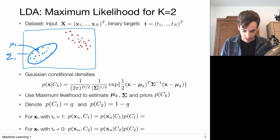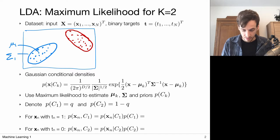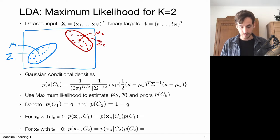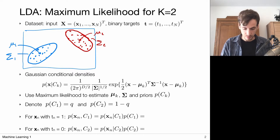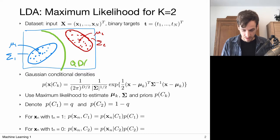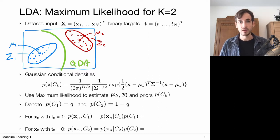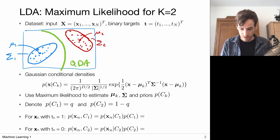The same applies for the second distribution — we want to recover the parameters for the Gaussian with mean mu_2 and covariance matrix sigma_2. When we model these conditionals with different covariance matrices, we end up with quadratic decision boundaries, leading to quadratic discriminant analysis. To keep it simple, we choose to share the covariance matrices, and that leads to linear discriminant analysis.